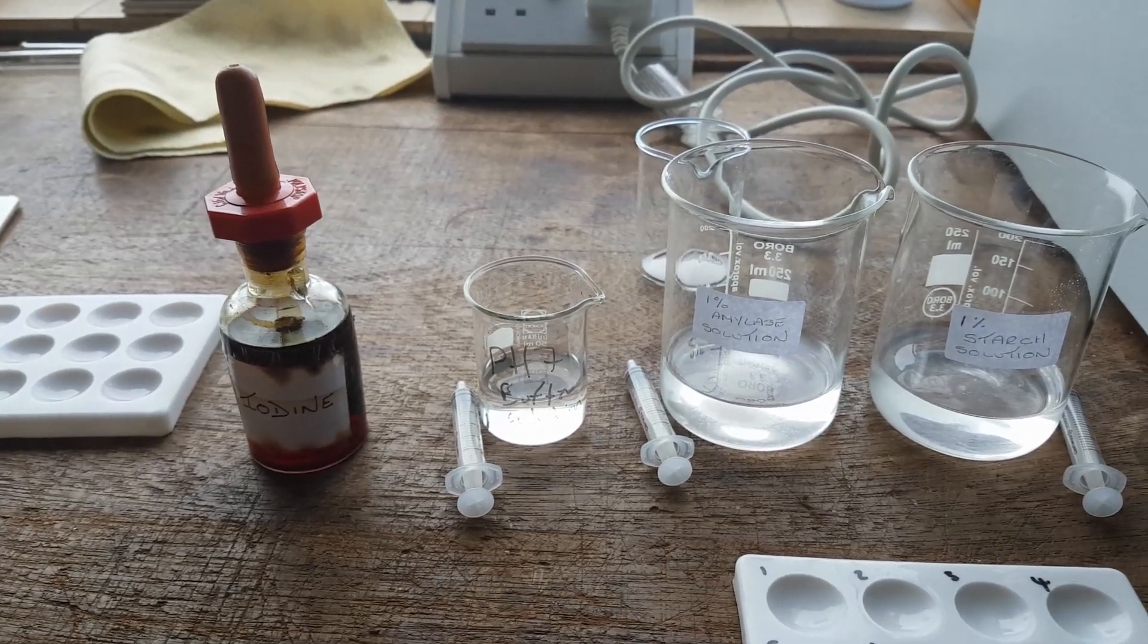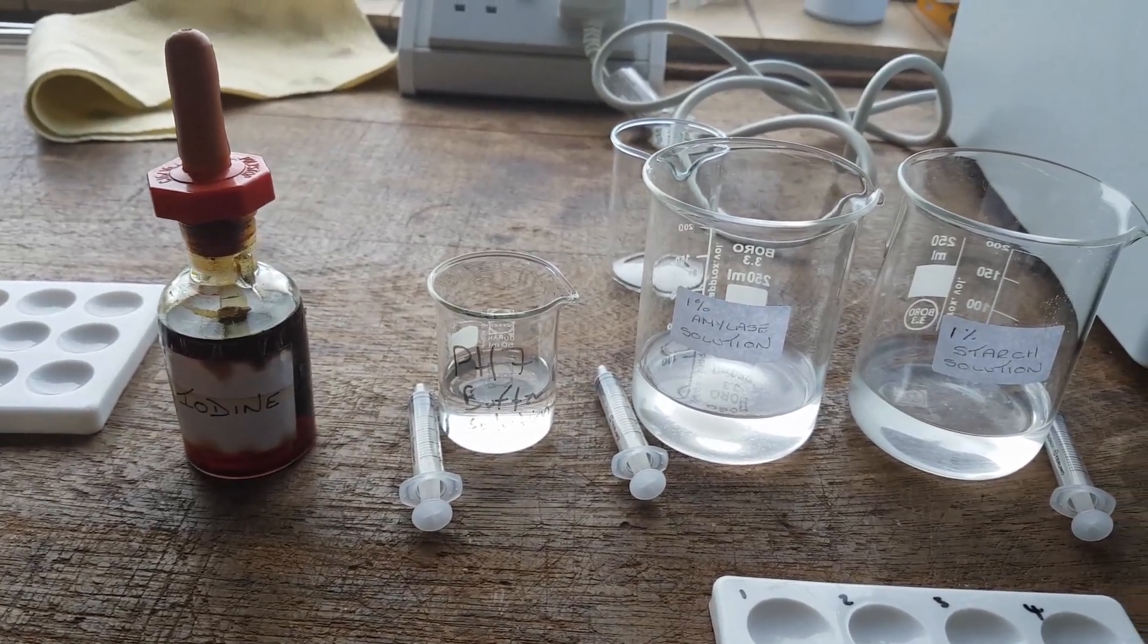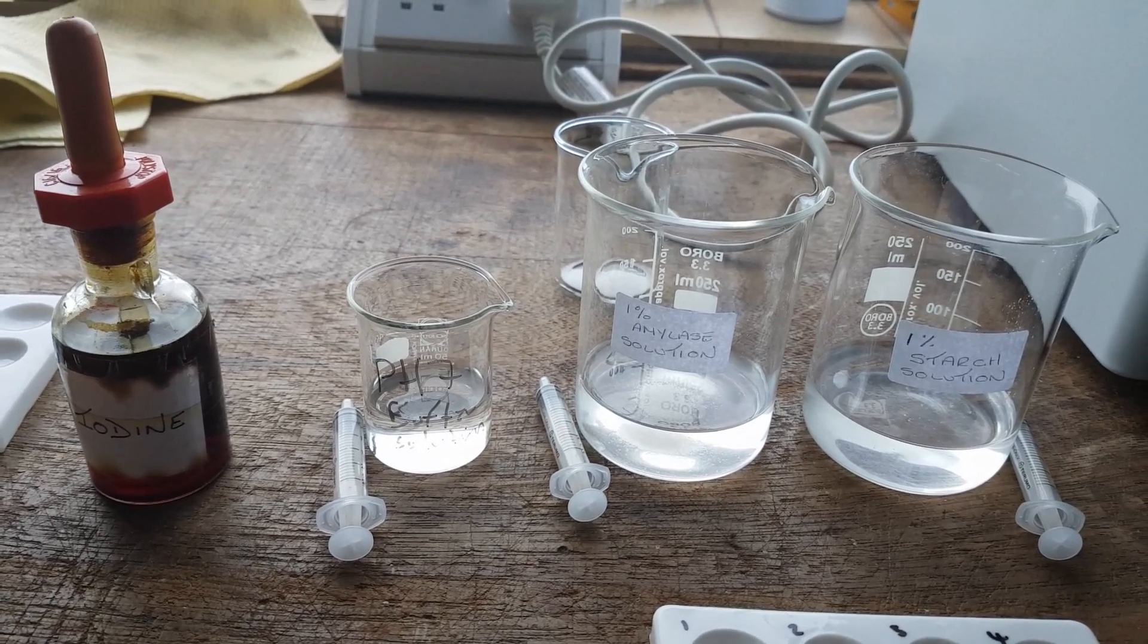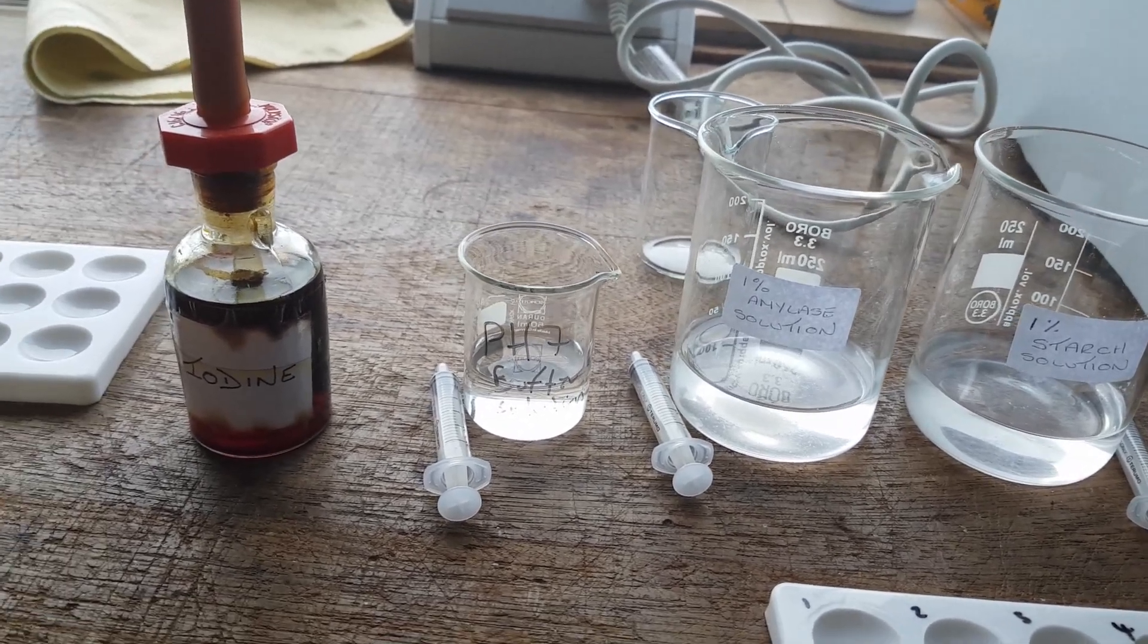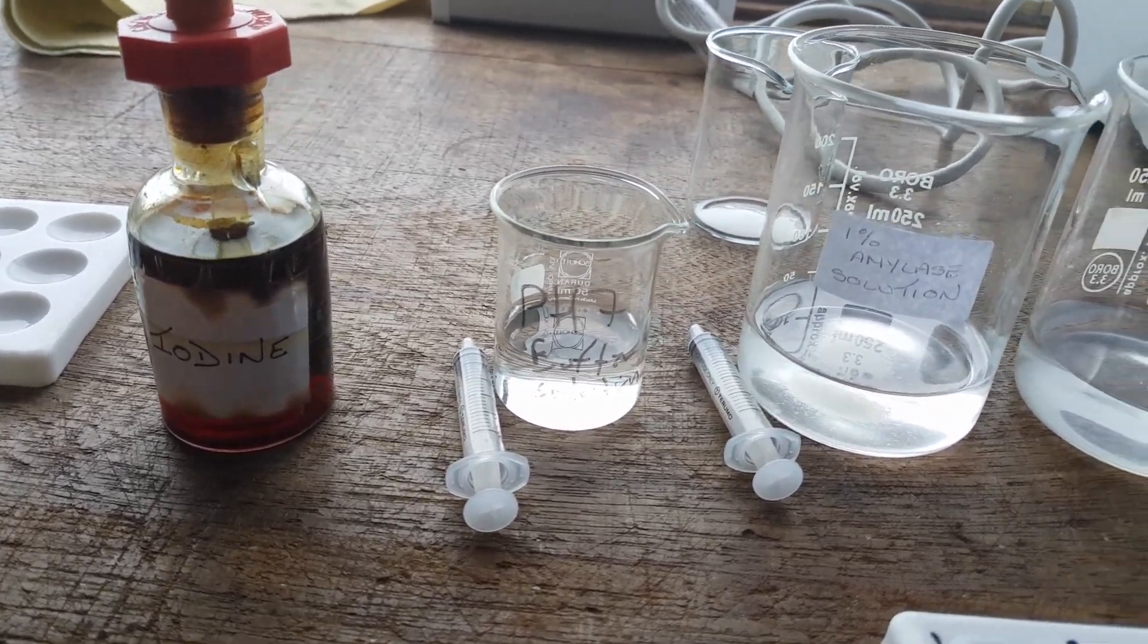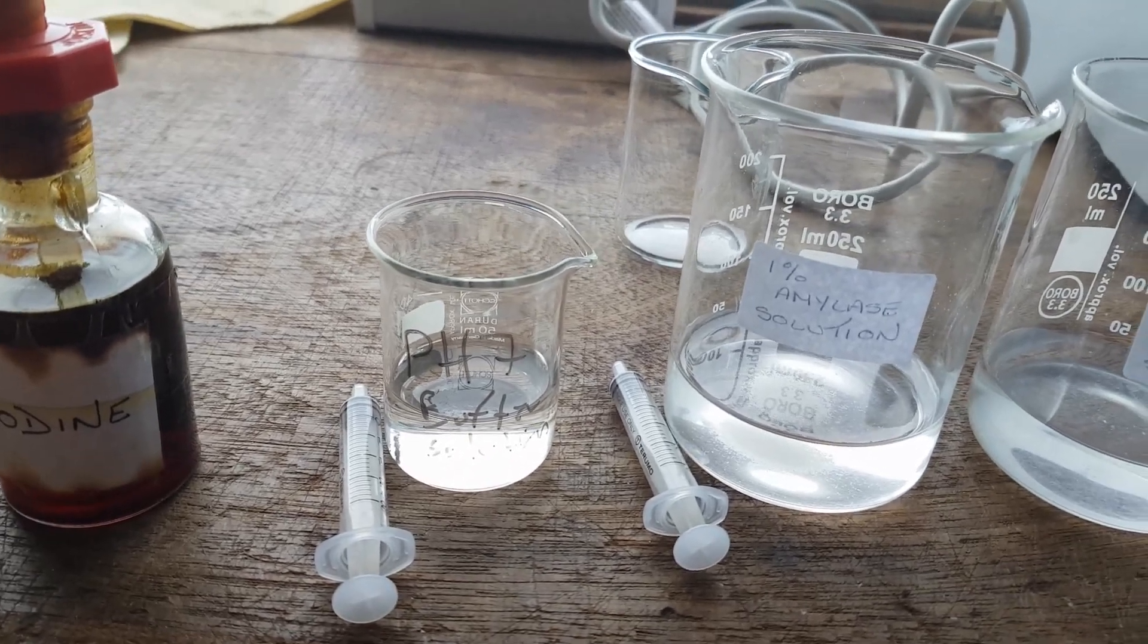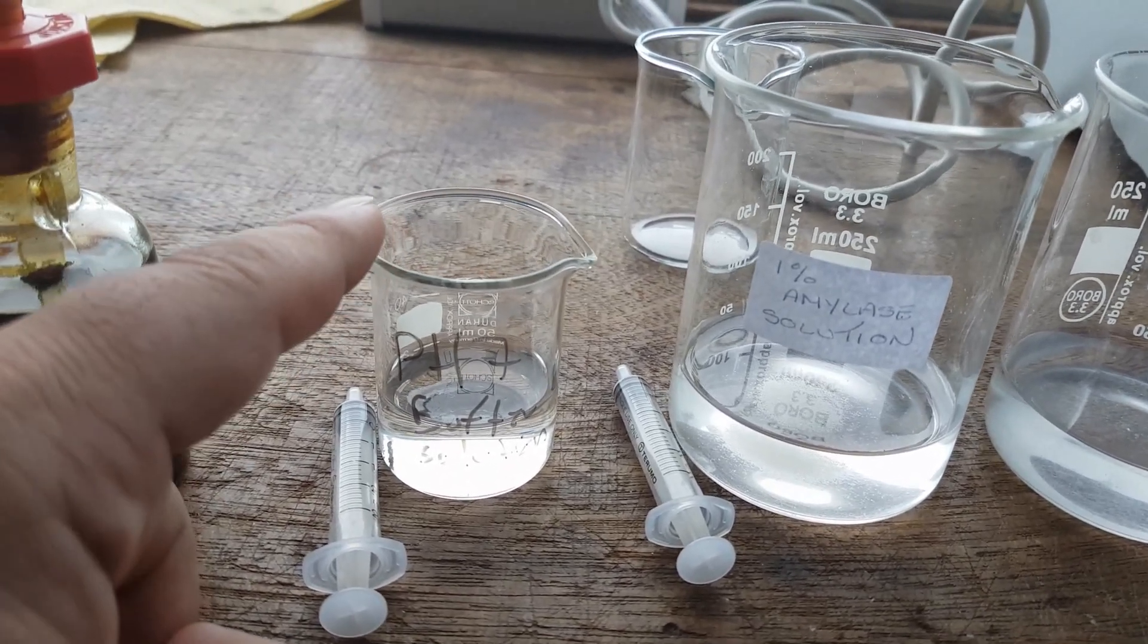Alright guys and girls, today we're going to look at how pH affects enzyme activity. For this equipment, what we will need is iodine solution. This here is a 2.5 ml syringe. We're going to use, what we're changing is the pH,